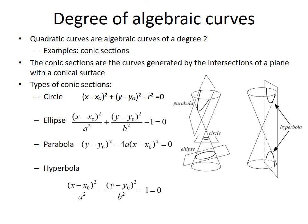Algebraic curves of degree 2 have a special name. They are called quadratic curves. Widely used quadratic curves are conic sections. The conic sections are the curves generated by the intersections of a plane with a conical surface. Cones and conic sections are shown in the image.